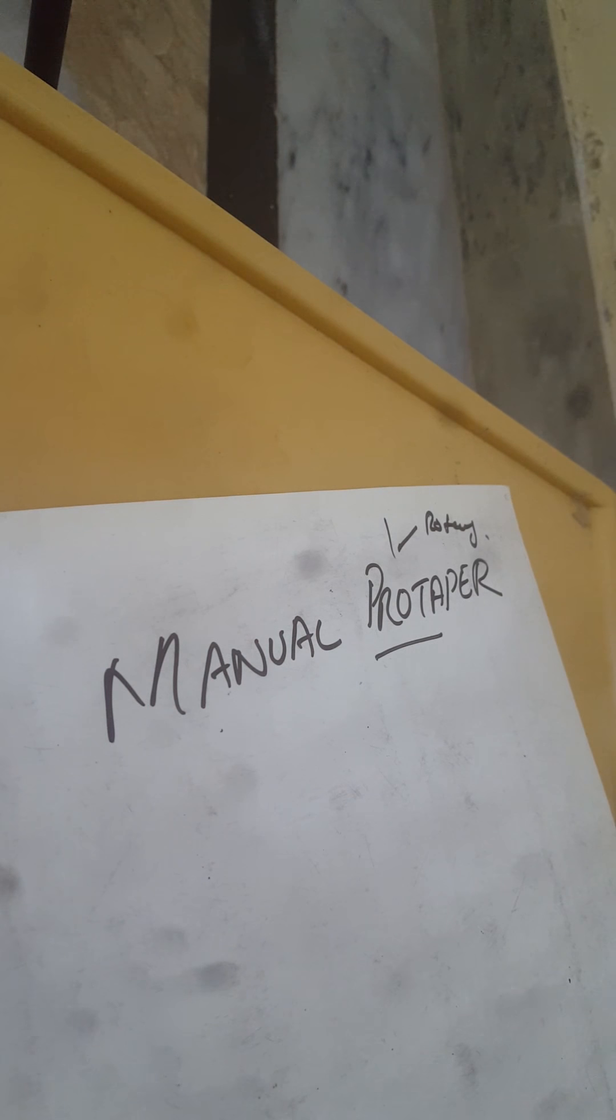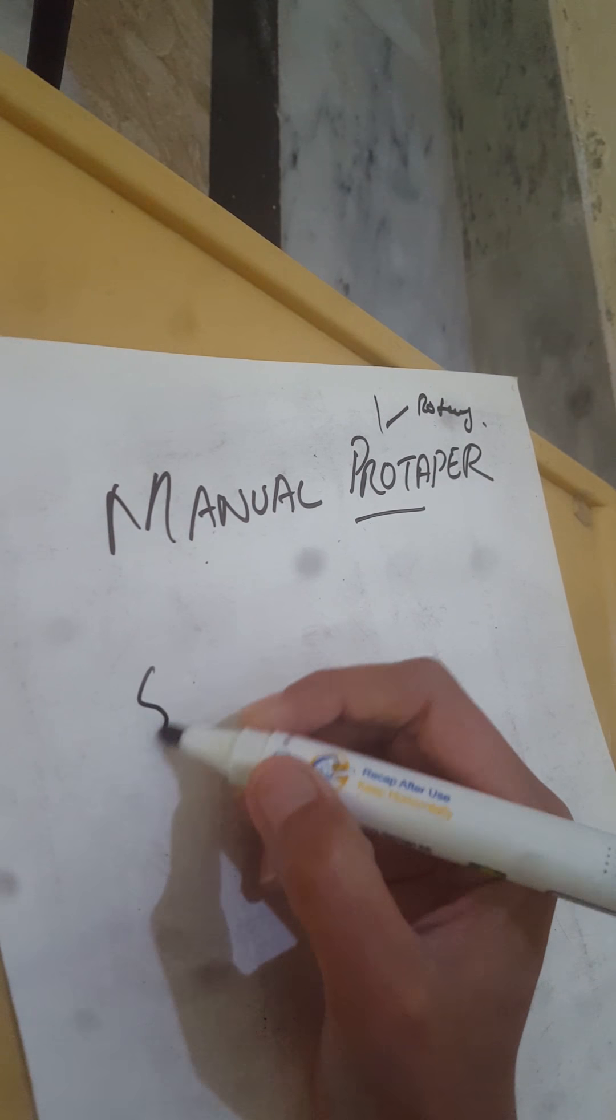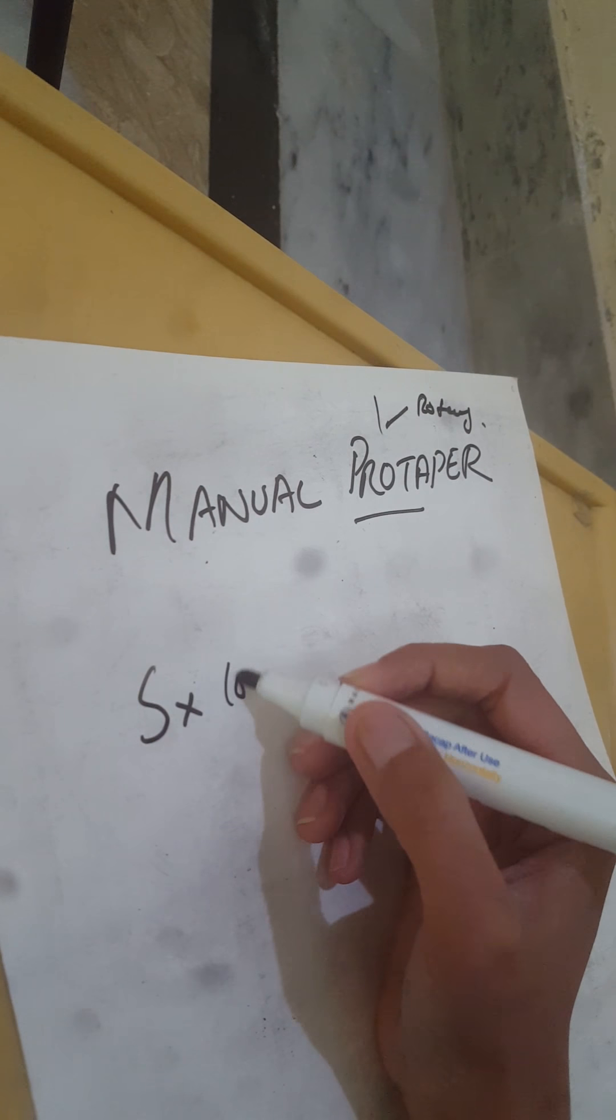In manual rotary we have different types of files. I have a mnemonic by which I remember such files. The first file we use in rotary is sx. It is used for the orifice widening.